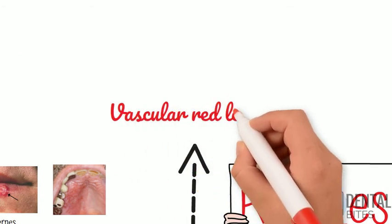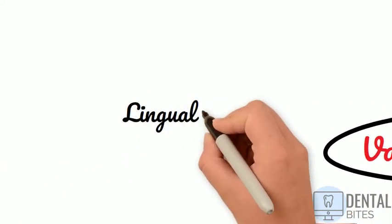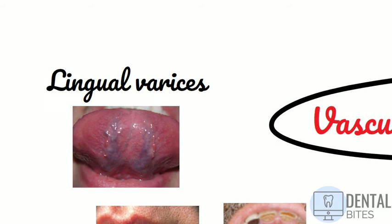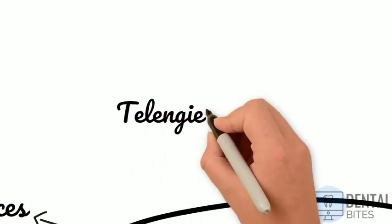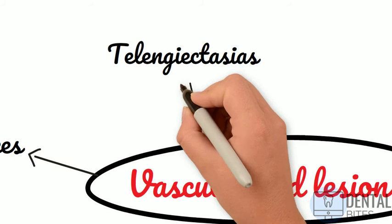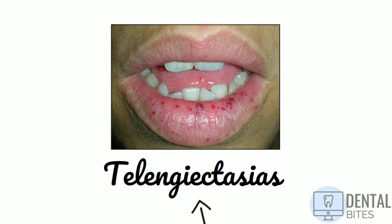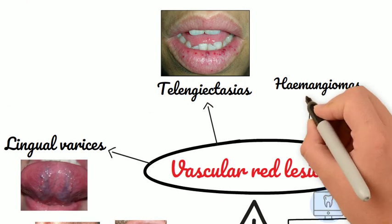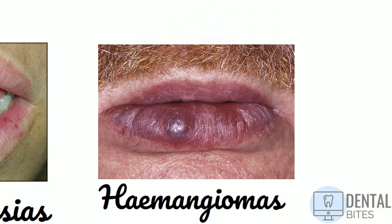Moving on to vascular types — you might see lingual varices, which is just a variation of normal anatomy commonly seen on the ventral side of the tongue. Also telangiectasias, which are essentially small dilated blood vessels that occur near the surface of the skin or mucous membranes. Hereditary haemorrhagic telangiectasia is a rare genetic disorder where these lesions can be seen. And lastly hemangiomas, sometimes called strawberry marks, which are benign tumours of endothelial cells commonly seen on the lower lip. If you apply direct pressure to them they should blanch, which can help differentiate them from pigmented lesions.